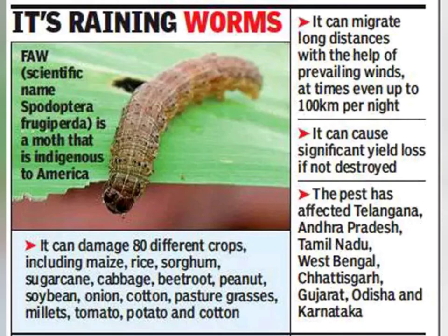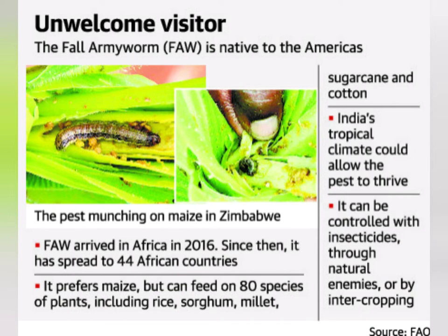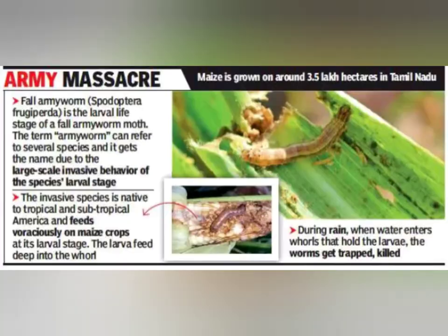Recently, Spodoptera frugiperda and Spodoptera litura have been reported as upcoming insect pests that cause damage to various economically important crops such as sugarcane, rice, corn, wheat, etc. They have also developed resistance against various insecticides and pesticides, and Bt toxin has not been effective against them.